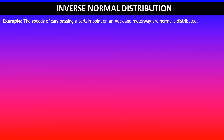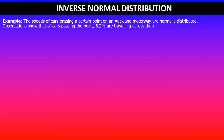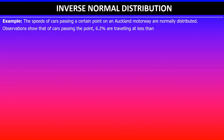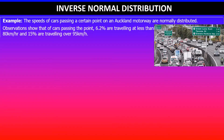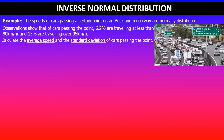We'll quickly have a look at the example. It says the speeds of cars passing a certain point on an Auckland motorway are normally distributed. Observations show that 6.2% of cars are traveling at less than 80 kilometers per hour, and 15% are traveling over 95 kilometers per hour. The question asks us to calculate the average speed, which is the mean value, and the standard deviation of cars passing the point.